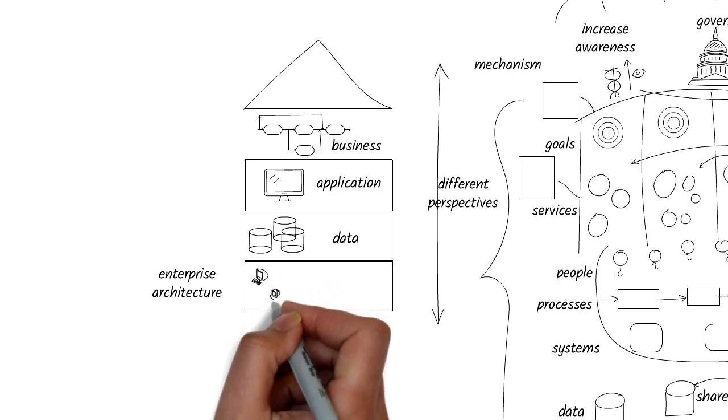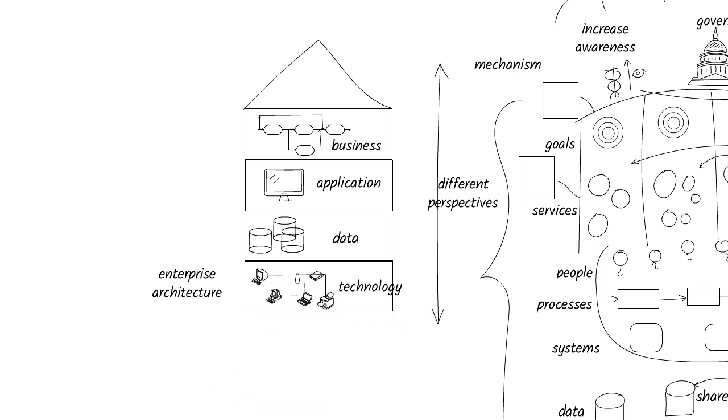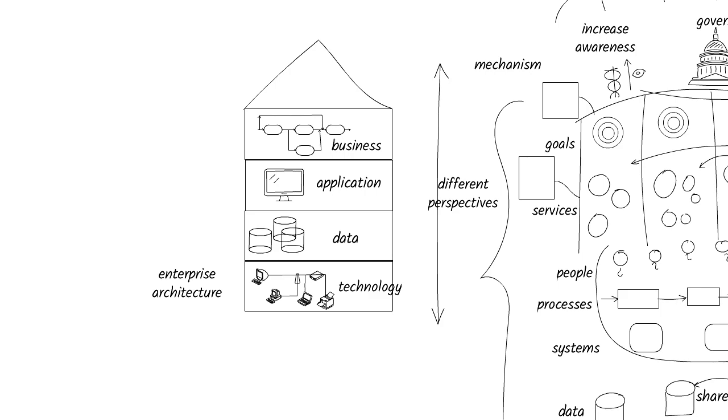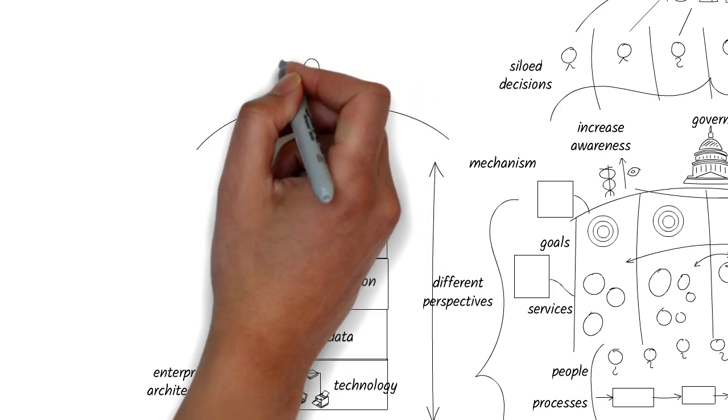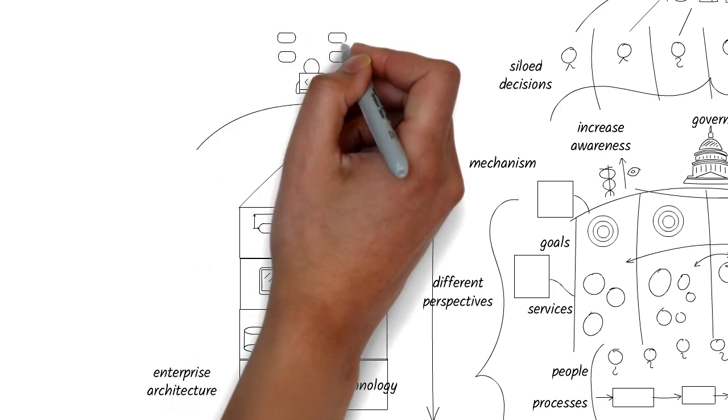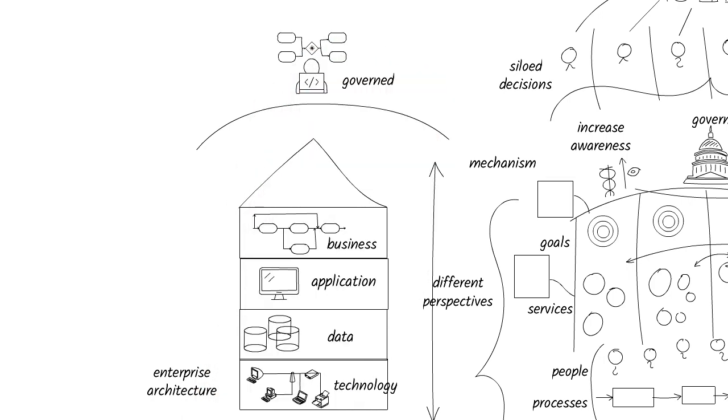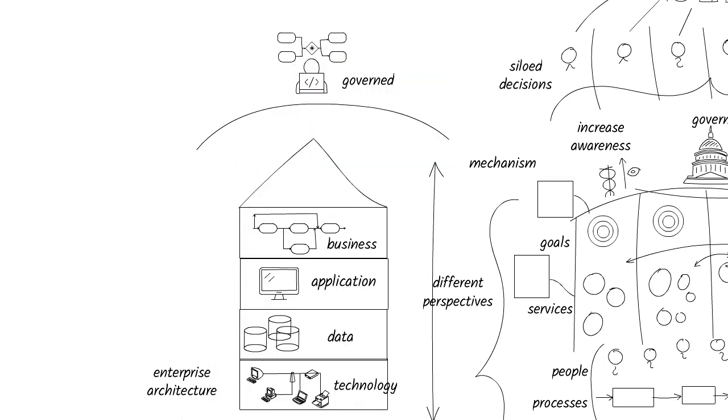The technology architecture describes the underlying IT infrastructure, including the hardware and software needed to run the business. To be used effectively across the government, this architecture must follow some standards and also be governed so it aligns with the different departments' mission and strategies.